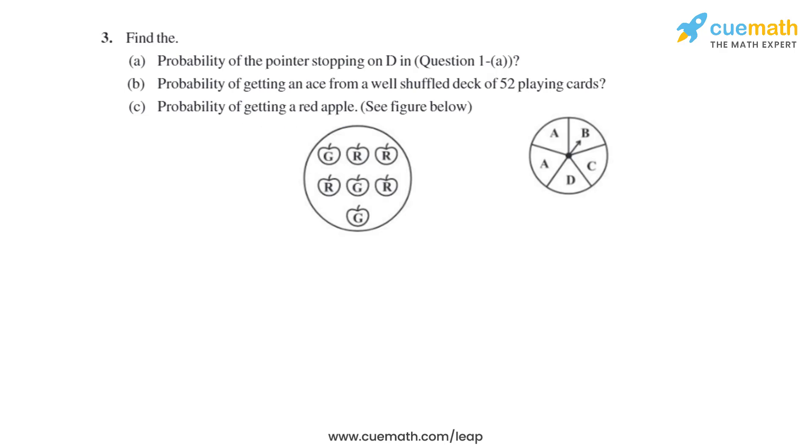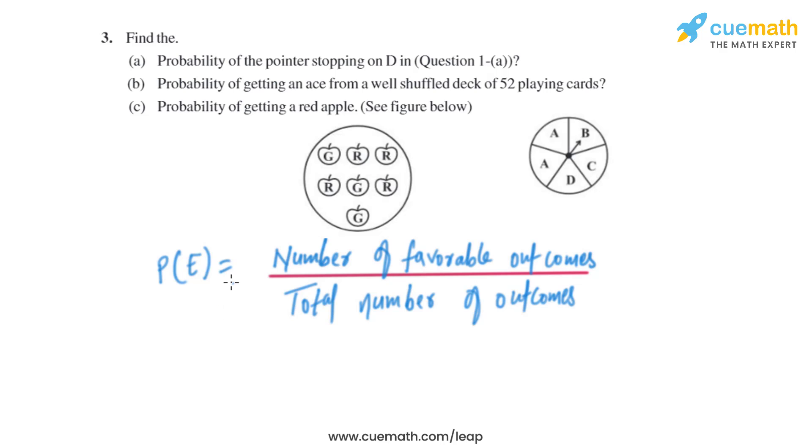To solve this question, we know that probability of an event is the number of favorable outcomes divided by the total number of outcomes.